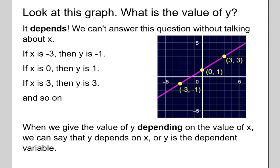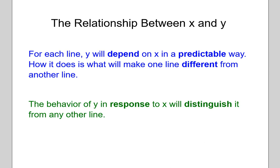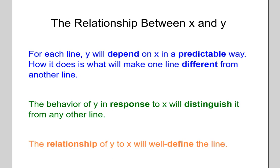When we give the value of Y depending on the value of X, we say that Y depends on X, or that Y is the dependent variable. The relationship between X and Y is what we are describing when we write down a linear equation. For each line, Y will depend on X in a predictable way, and how it does is what will make one line different from another. The behavior of Y as it responds to the value of X will distinguish it from any other line.